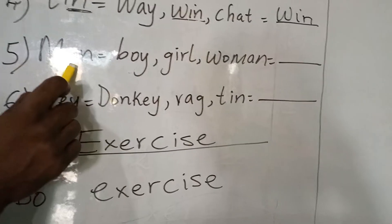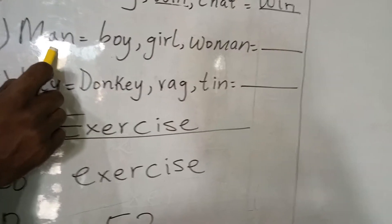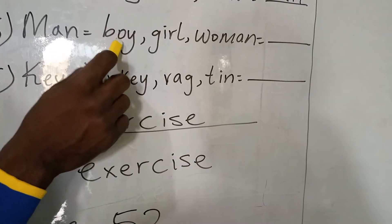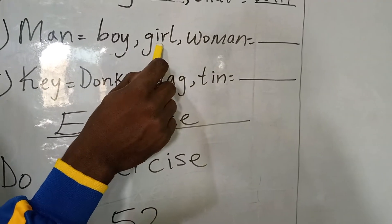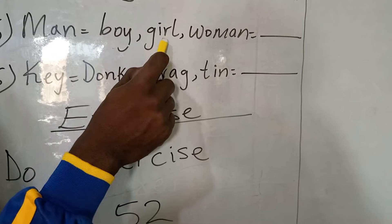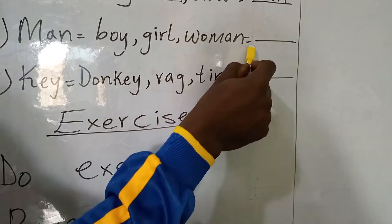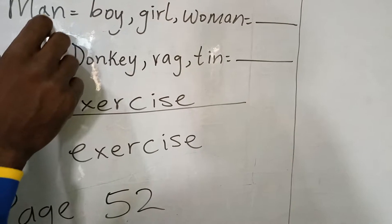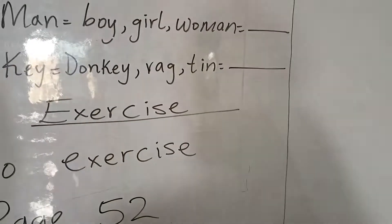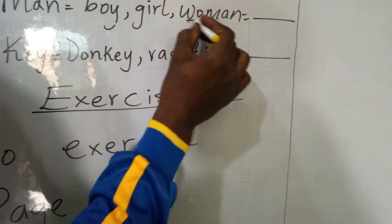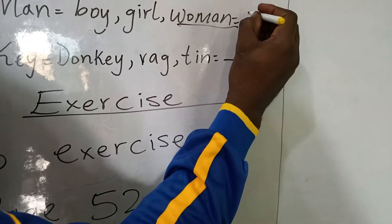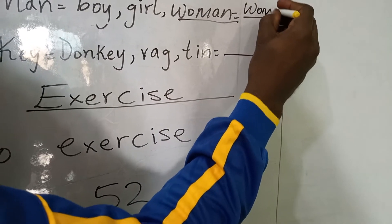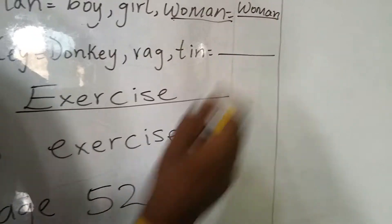Number 5: man. My father is a man, my brother is a boy, my sister is a girl, my mother is a woman. They want us to look at the word that is ending with A-N. So we have 'woman.' You come and write it here. Woman, man.